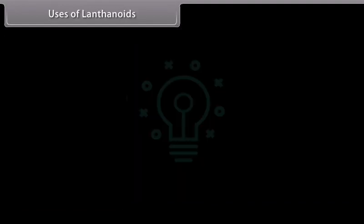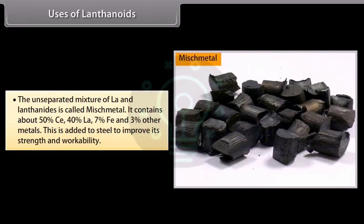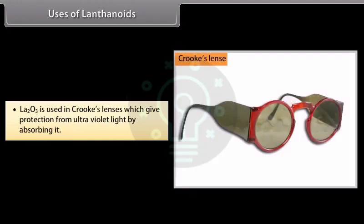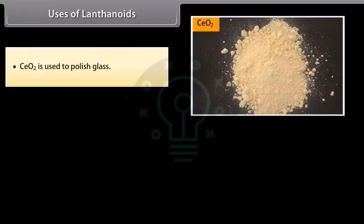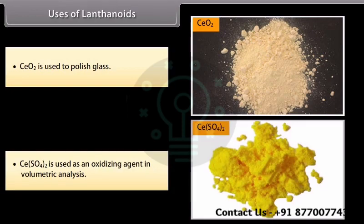Uses of lanthanoids: The unseparated mixture of lanthanoids is called Misch Metal, containing about 50% cerium, 40% lanthanoids, 7% iron, and 3% other metals. It is added to steel to improve its strength and workability and is also used in lighter flints. La₂O₃ is used in Krüg's lenses, which protect from ultraviolet light by absorbing it. CeO₂ is used to polish glass. Ce(SO₄)₂ is used as an oxidizing agent in volumetric analysis.